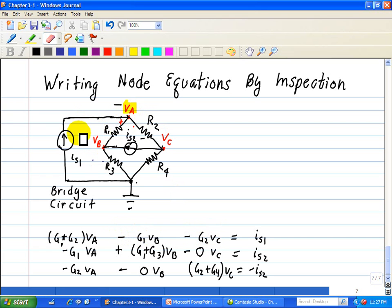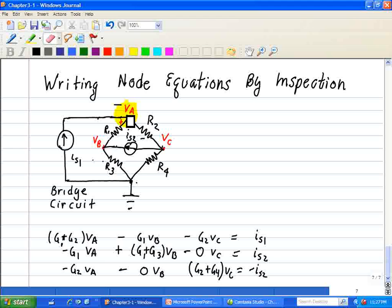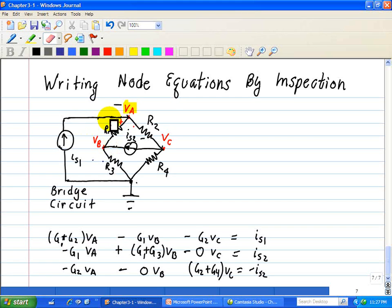Then we check our independent sources and we see what's coming into or out of the various nodes. In this case, we have IS1 going into node A. So we have IS1 on the other side. And you try to do this in a consistent basis. Now let's look at node B next.